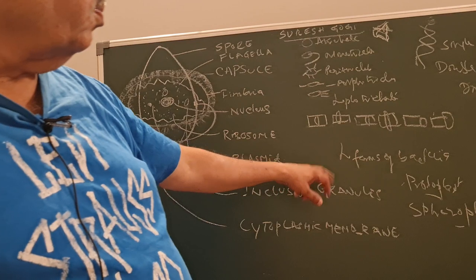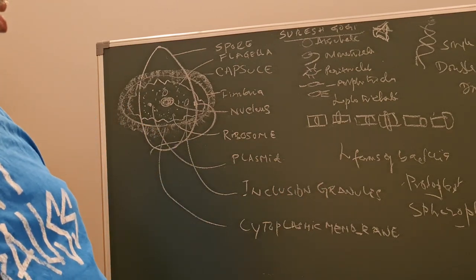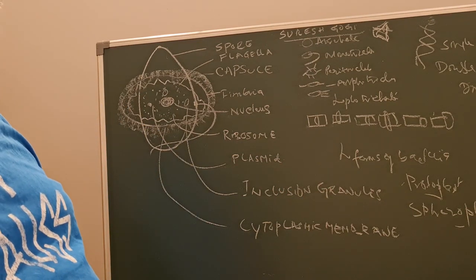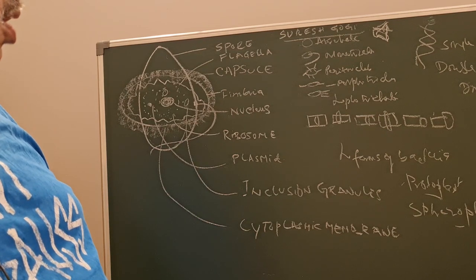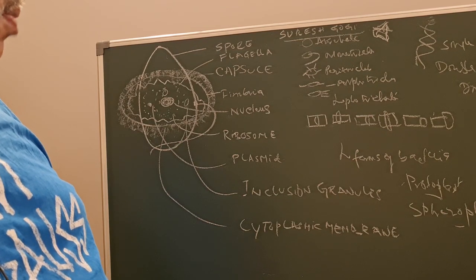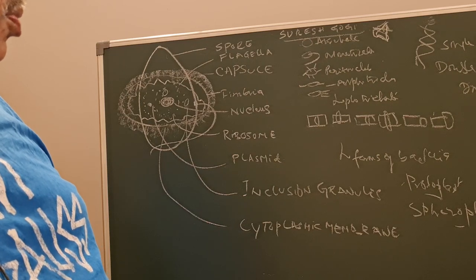Terminal bulging is seen in Clostridium tetani, giving a drumstick appearance. L-forms are formed when the cell wall is lost. They were found by Klieneberger-Nobel in Lister Institute of London. In the presence of penicillin, they lose the cell wall: protoplasts in gram-positive and spheroplasts in gram-negative.